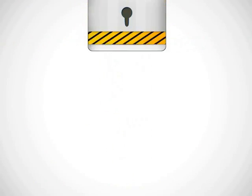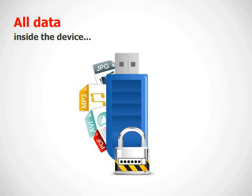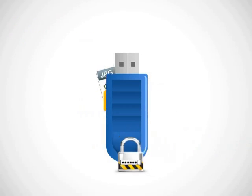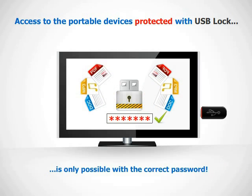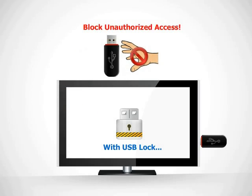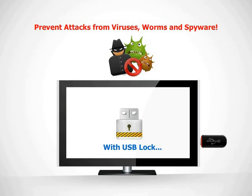When you use USB Lock to protect your USB drives, all data inside the device as well as information about that device is locked. Access to the portable devices protected with USB Lock is only possible with the correct password. You can easily prevent data leaks, block your devices from unauthorized access, as well as prevent attacks from viruses, worms, and spyware that spread through such mediums.